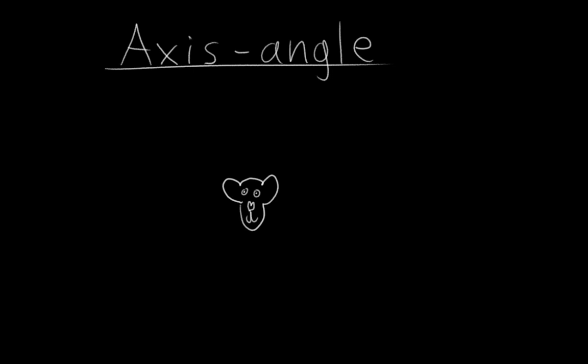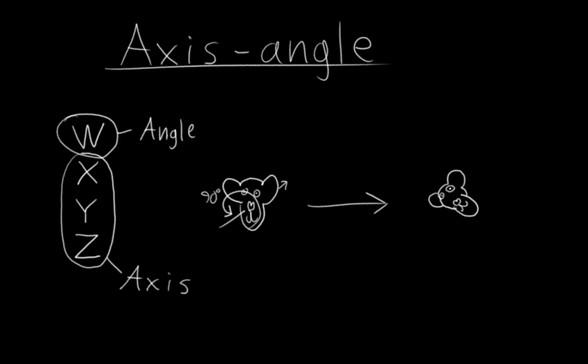You have an object, you specify an axis to rotate around and an amount to rotate around it, and bam, it's rotated. Holy crap is that simple! It takes four numbers: three for the axis and one for the angle, and it couldn't be conceptually simpler.